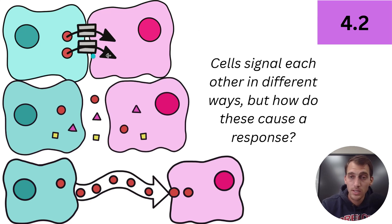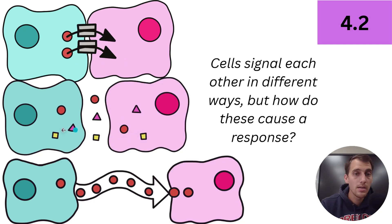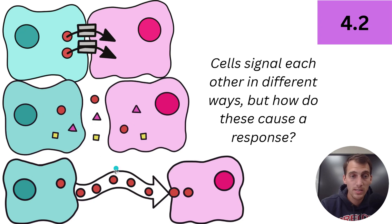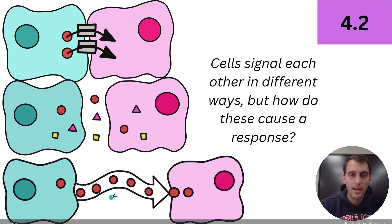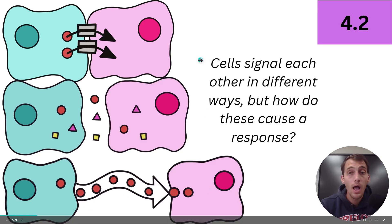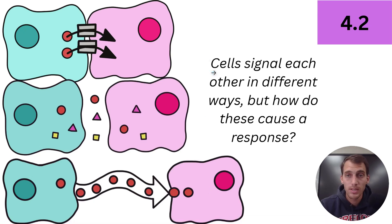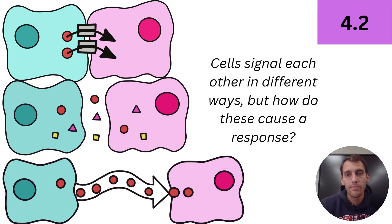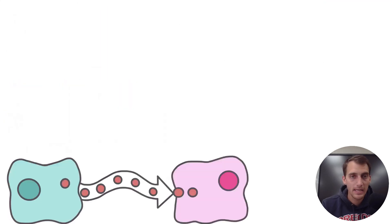Here's direct contact — the cells are touching each other to transmit information. Here's local signaling — they're sending signals to each other over a short distance. And then here's long distance or endocrine signaling, where this red molecule must be like a hormone traveling through the bloodstream. But here's my question for you: cells signal each other in different ways, but how do these cause a response? How do we get from cause to effect?